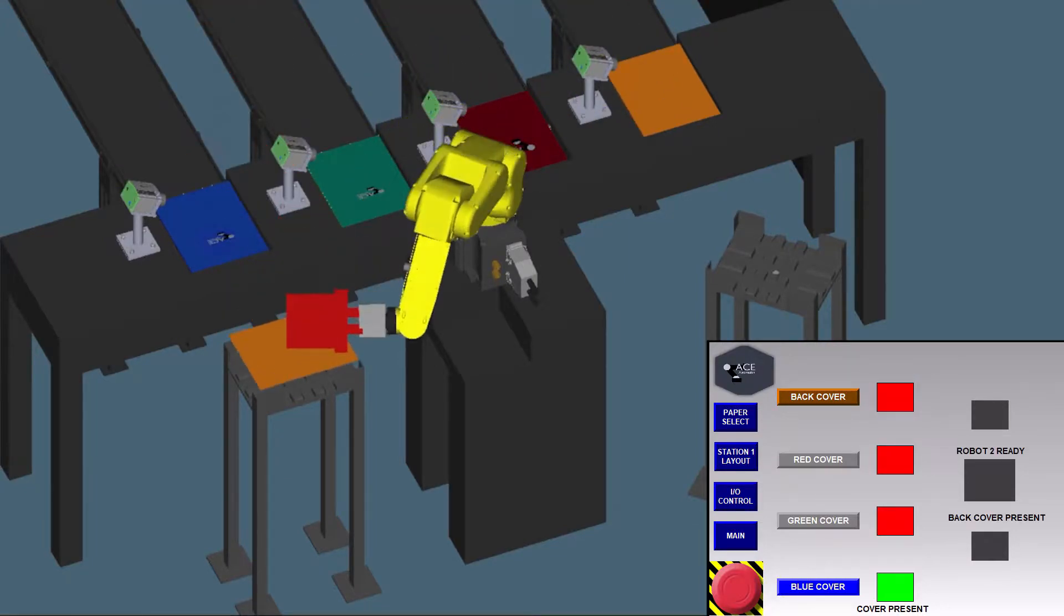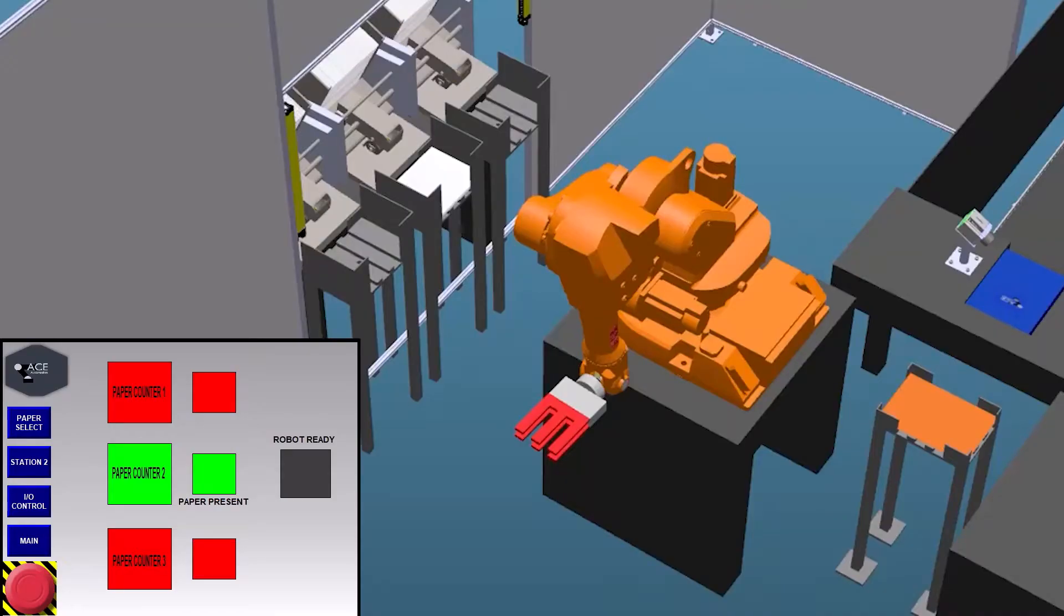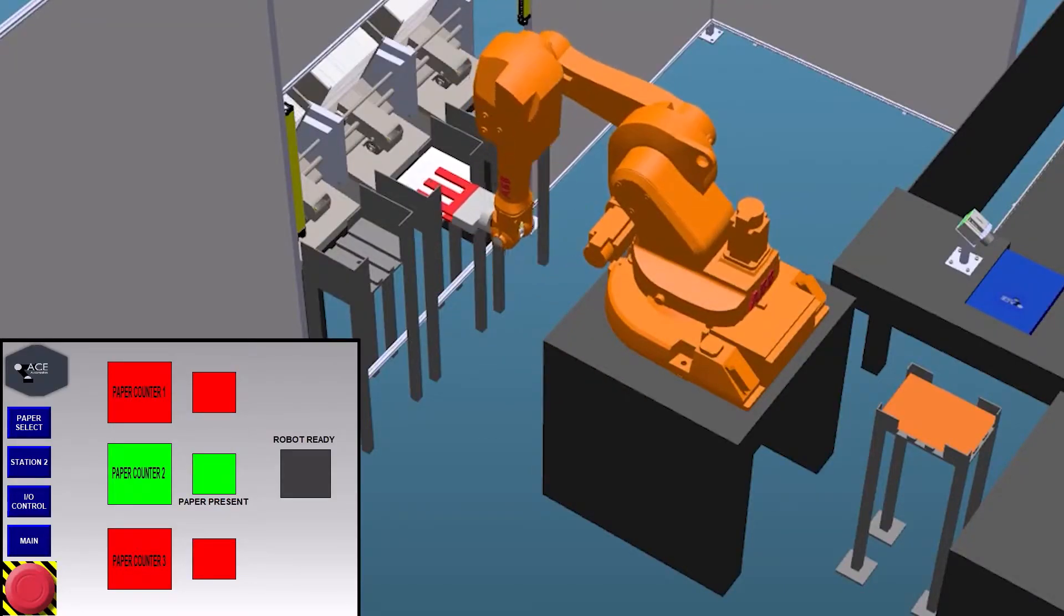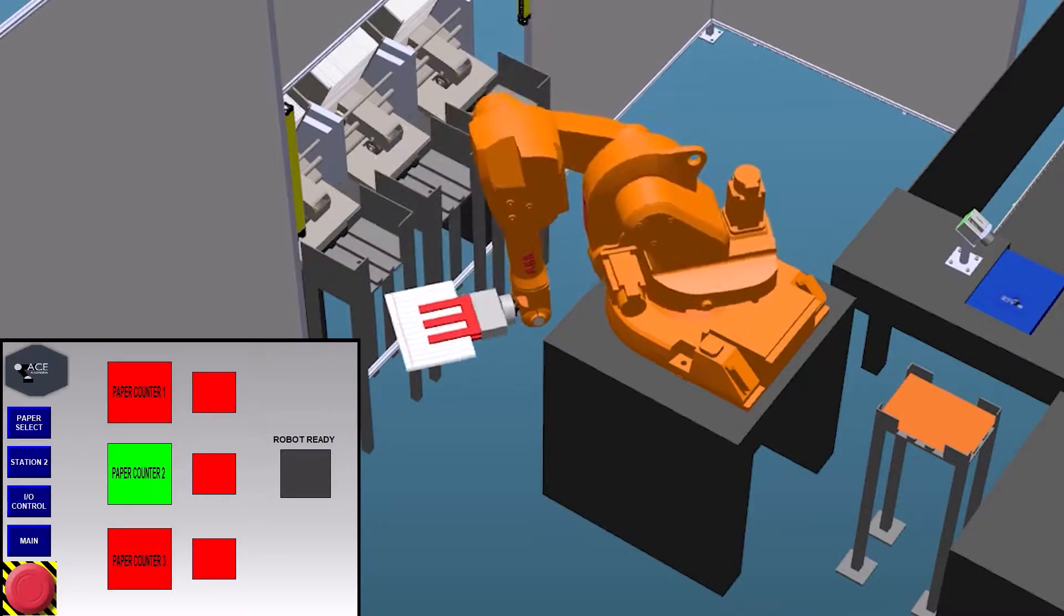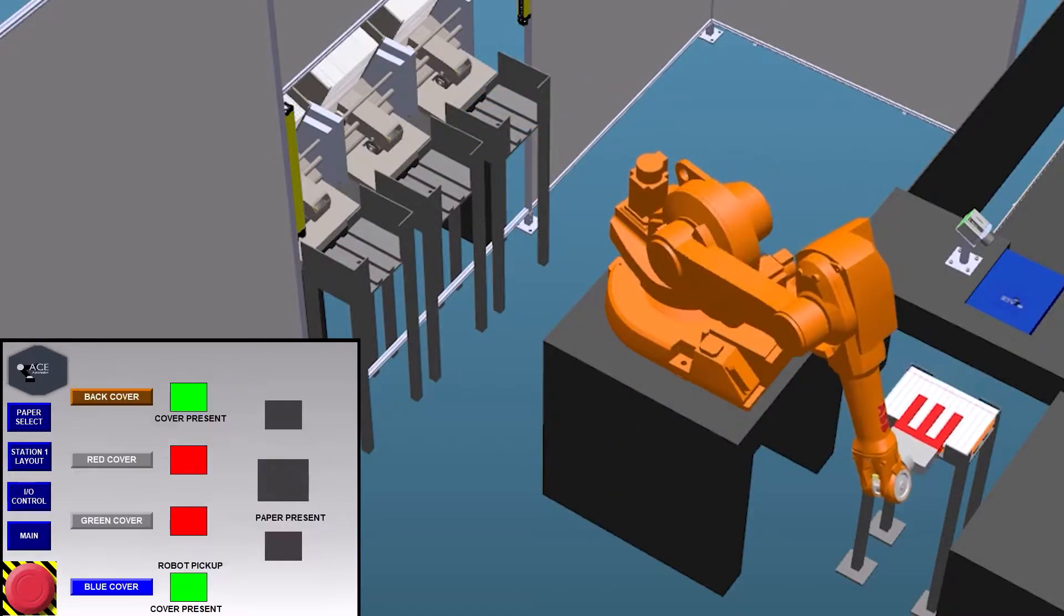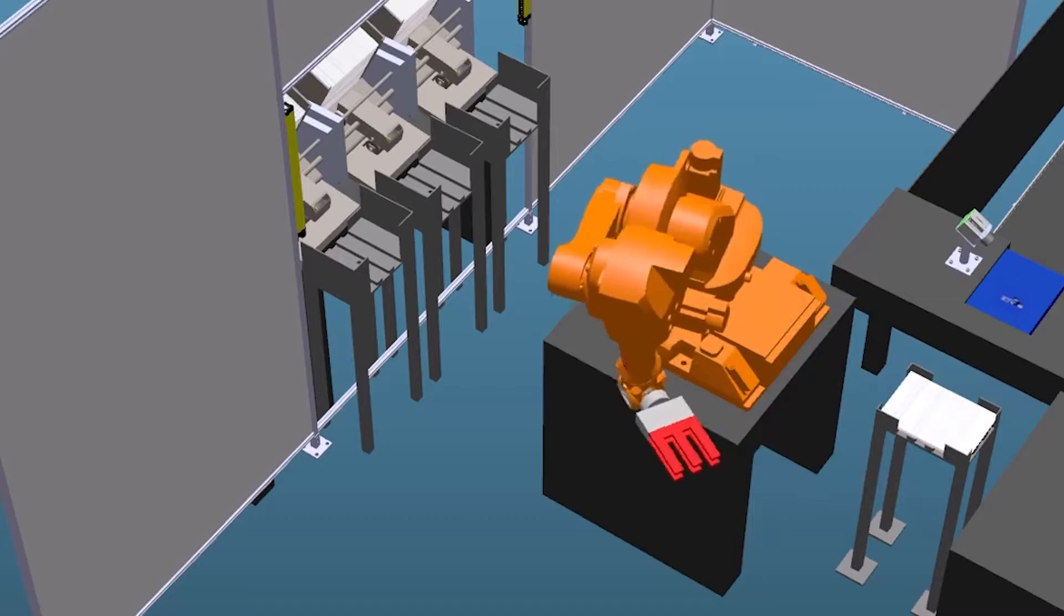The FANUC robot picks and places the back cover on the first forming table. Once the stack of paper is completed, the ABB robot picks up the stack using our specially designed grippers and transfers it over to the forming table where the back cover is present.